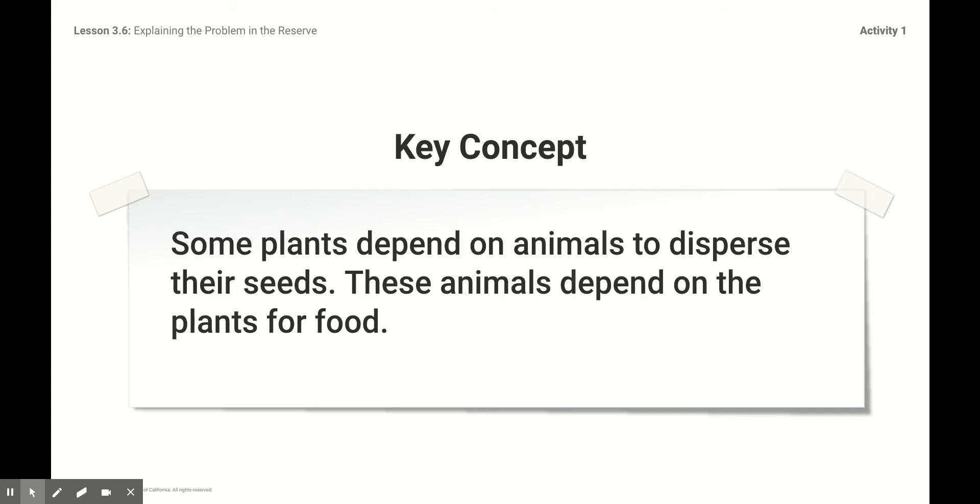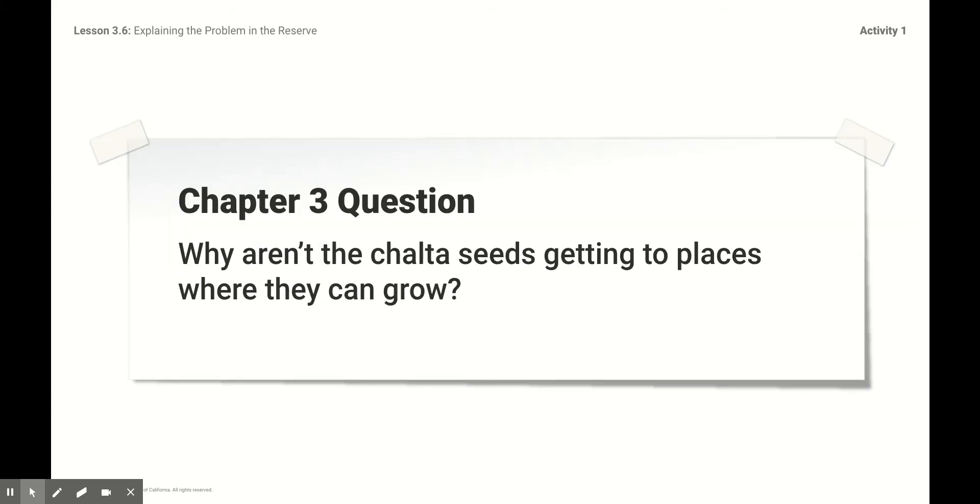That means that some plants depend, they need those animals to disperse, give out their seeds. And these animals also depend on the plants for food. We need to think about the birds. They need the trees. They need the fruit from the trees. The bears need the fruit from the bushes, just like the bees need the nectar from the flowers in order to survive.